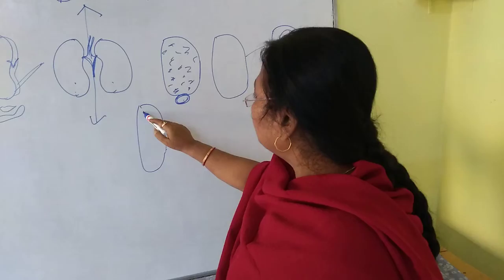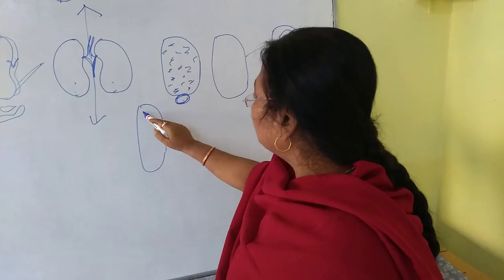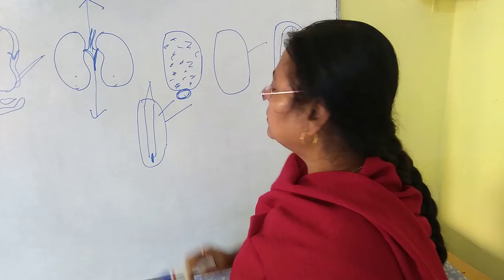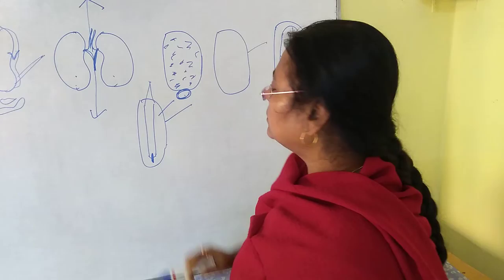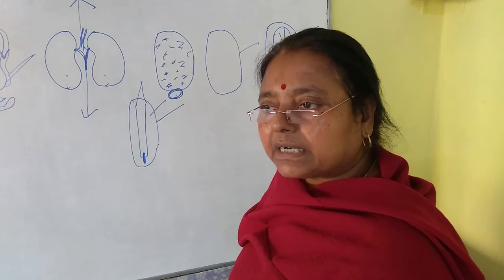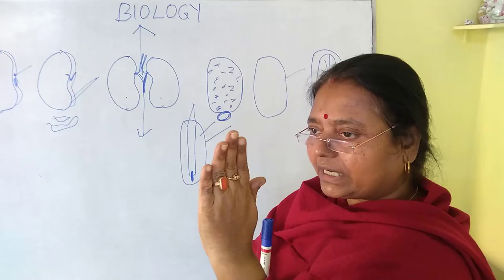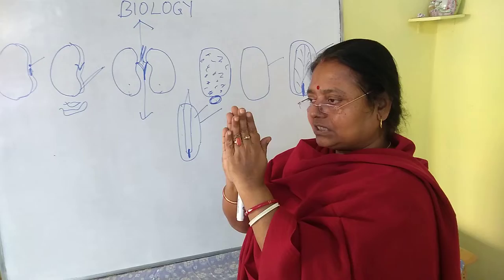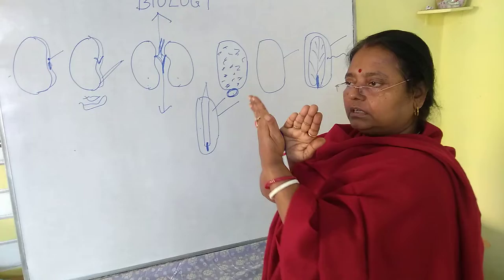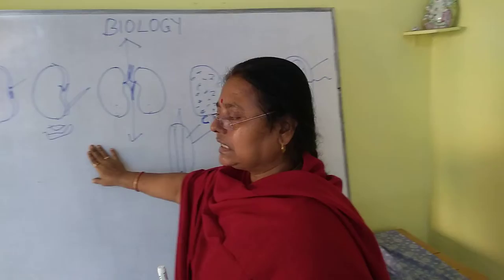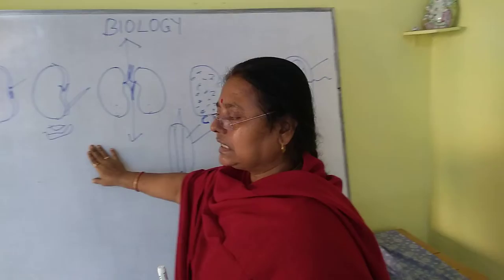Looking at the side view, the tegmen, endosperm, two cotyledons, and embryonal axis are all visible. The two cotyledons look very thin from the side. Think of the embryonal axis with two hands as the cotyledons — placed like this. The two cotyledons are thin and papery. So this is a dicot seed that is albuminous; the previous bean seed was exalbuminous.